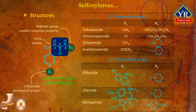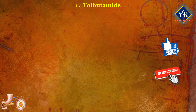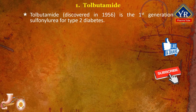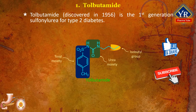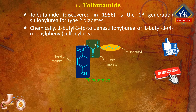The examples of drugs of first and second generation sulfonylureas are given in the table. Coming to the individual drugs, the first drug is tolbutamide. Tolbutamide is the first generation sulfonylurea and was discovered in 1956. It is used in the management of type 2 diabetes if diet alone is not effective. It is chemically 1-butyl-3-para-tolyl sulfonylurea or 1-butyl-3-(4-methylphenyl)sulfonylurea. It is an N-sulfonylurea that consists of 1-butylurea having a tosyl group attached at the third position.